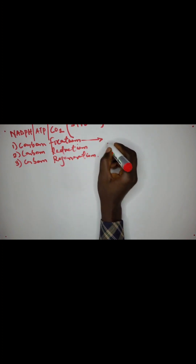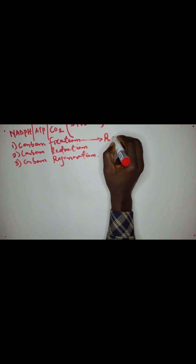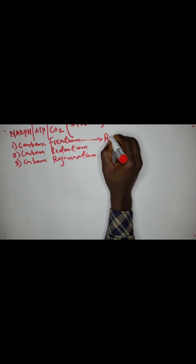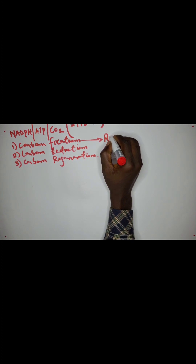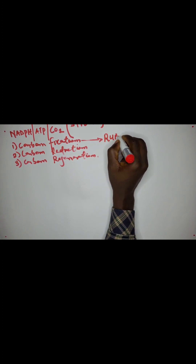The carbon fixation step, as the name implies, means we want to fix carbon with something. In the stroma, we already have a five-carbon sugar present, which is ribulose-1,5-bisphosphate — we can just write it as RuBP. RuBP stands for ribulose-1,5-bisphosphate.